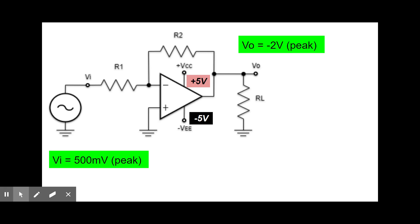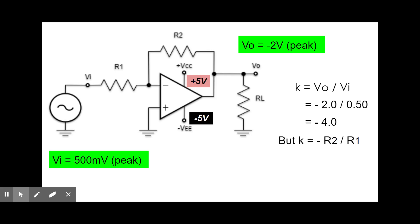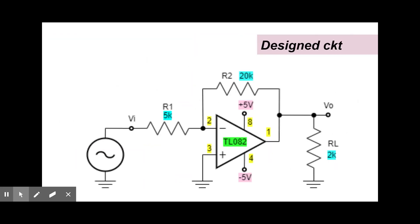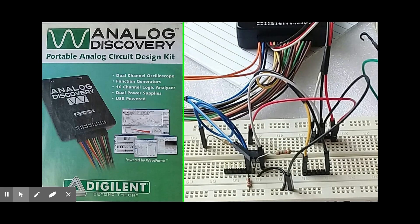Now, we will calculate the constant K that will be multiplied to Vi so that Vo will be 2 volts. K equals Vo over Vi equals negative 2 divided by 500 millivolts equals negative 4. But since K is equal to negative R2 over R1, we can assign a value to one of the resistors. For example, I use R1 equals 5k, and so R2 equals 20k. The circuit is now complete, and I have assembled it on my solderless breadboard. It's time to test it.